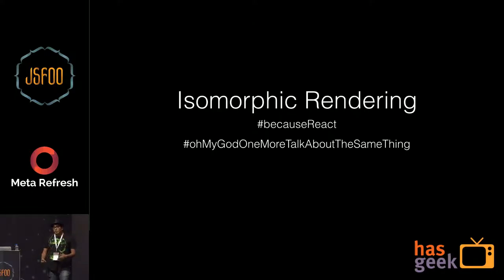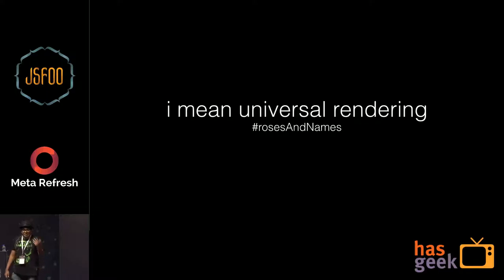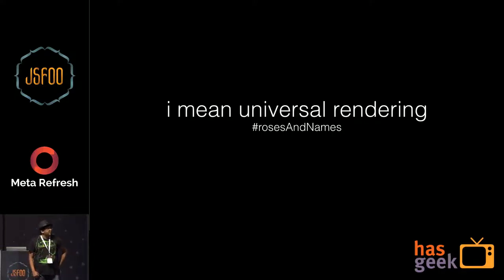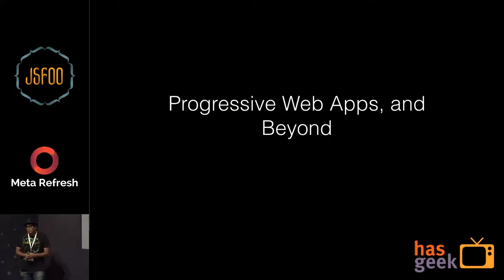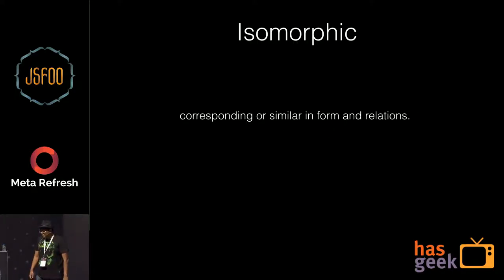Then finally came isomorphic rendering as we know it, made incredibly popular by React, even though many people had been doing it in various forms in the years before. And there's universal rendering — the first time I heard that term was actually at this conference. The difference is that universal rendering also covers native applications. And beyond isomorphic rendering are progressive web apps — the bright future we're all moving towards.